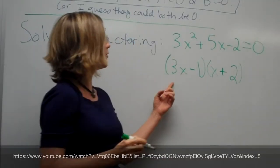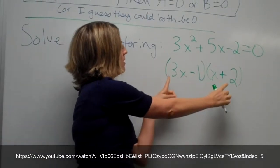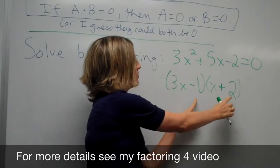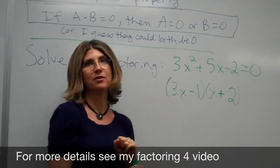So notice if we foil this out, we get 3x squared plus 6x minus 1x is 5x, and minus 1 times 2 is minus 2.